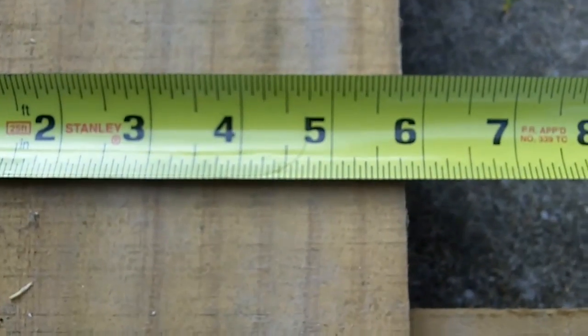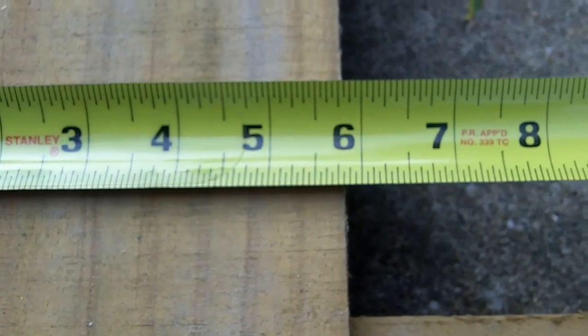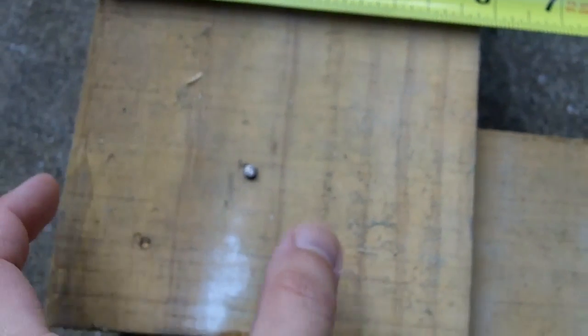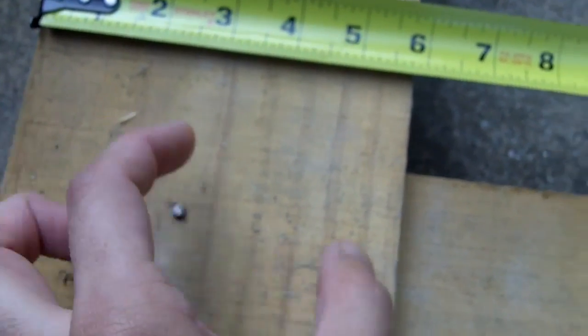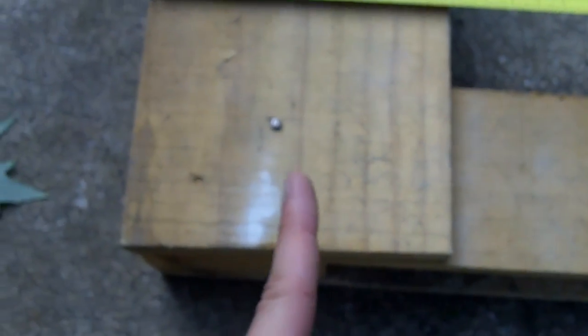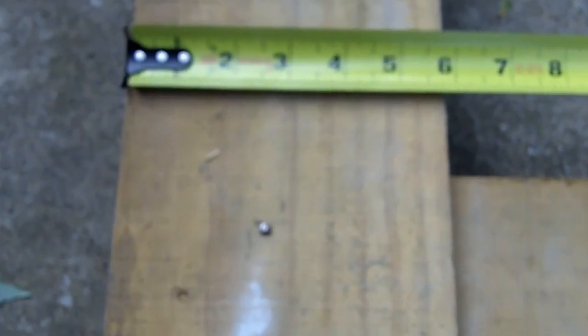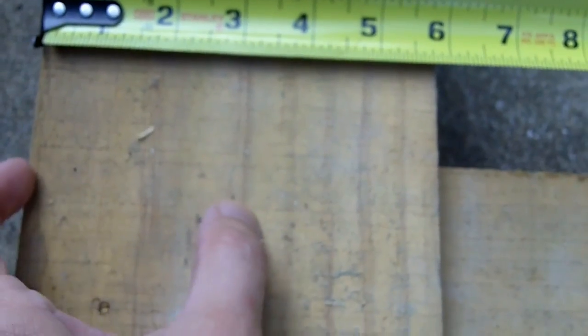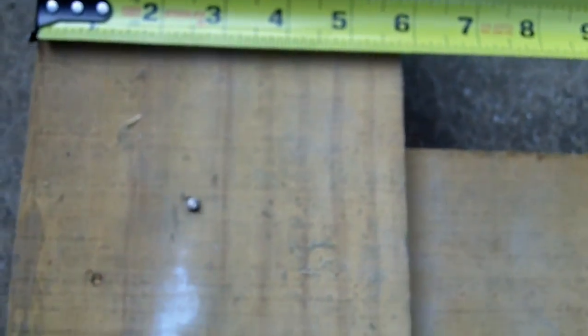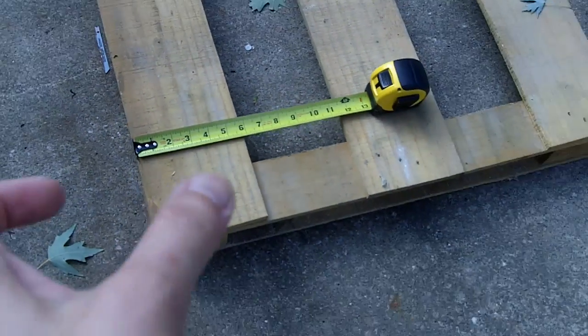So the planks as you can see are not quite six inches wide, they're more like five and three quarters. So if I rip it right down in half at three inches, the other one's going to be too narrow. So I'm going to cut it right down the middle at about two and three quarters, so I should have two pieces that are two and three quarter inches wide.